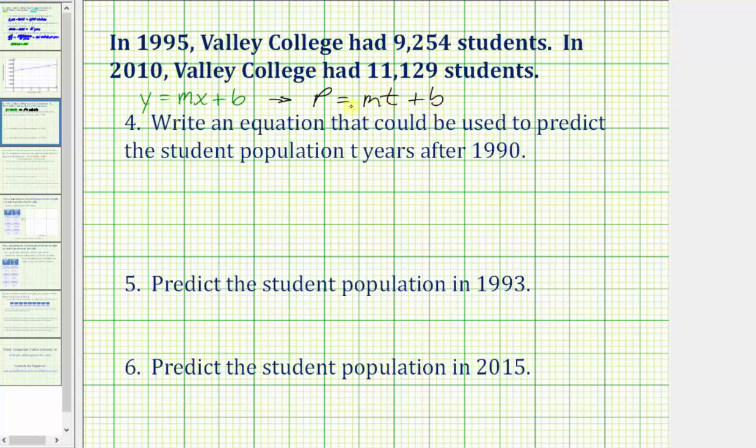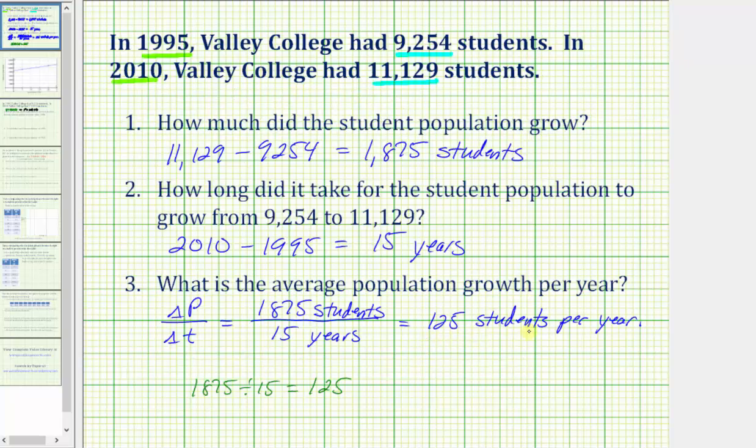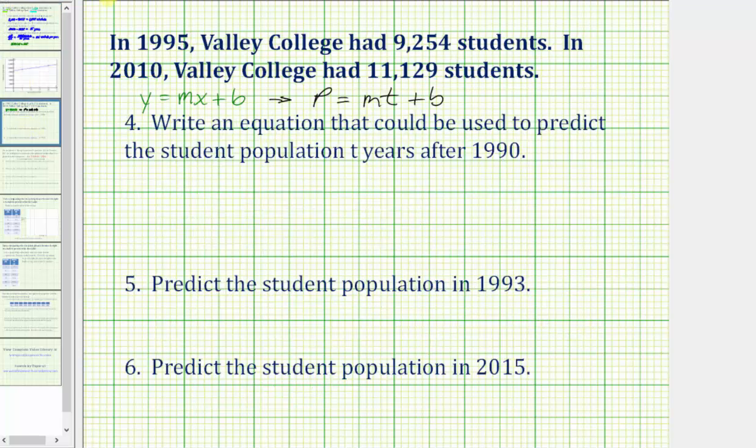So to write the equation, we need to find m, the slope, and b, the vertical intercept. But the slope m is the constant rate of change, which in our case is the average growth rate per year, which we already found to be 125 students per year. So we know m equals 125, so our equation must be in the form p equals 125t plus b.